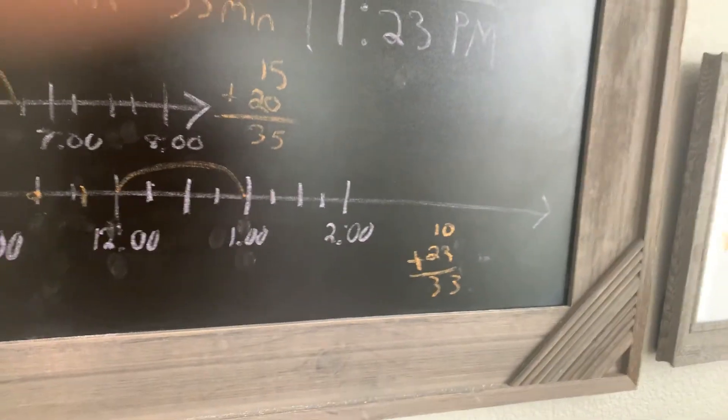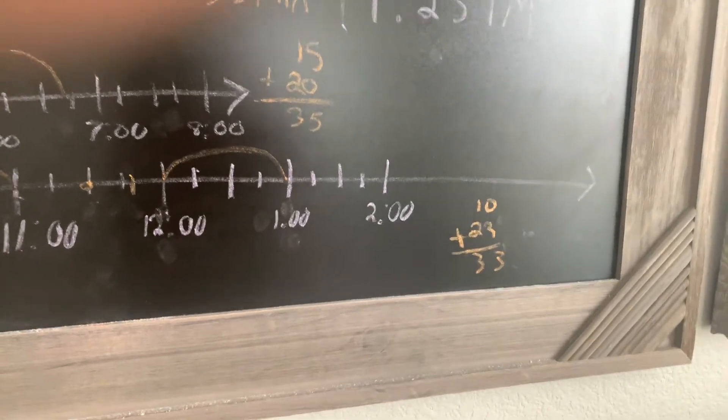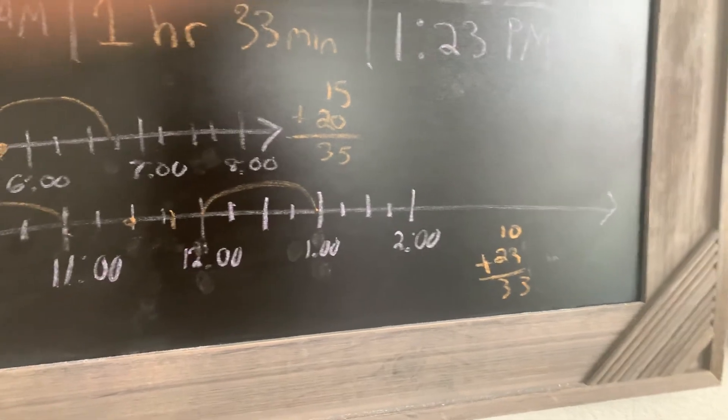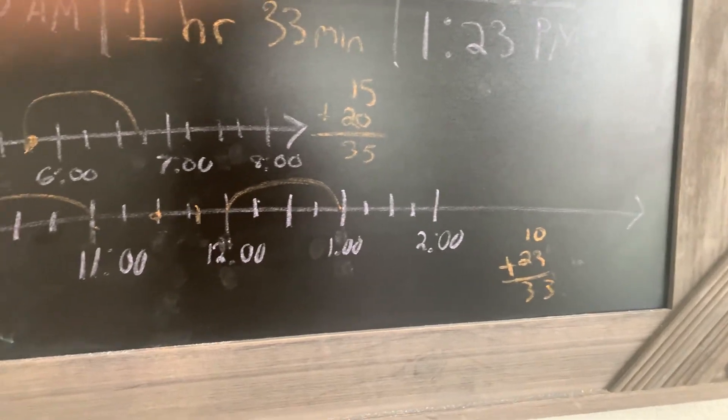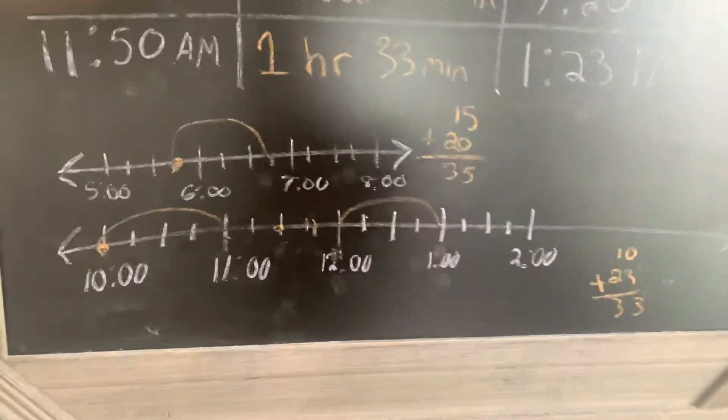So if you get to 60, that's an hour. And then you got to start all over with the minutes. Because there's no such thing as 60 o'clock or 11:60. All right.